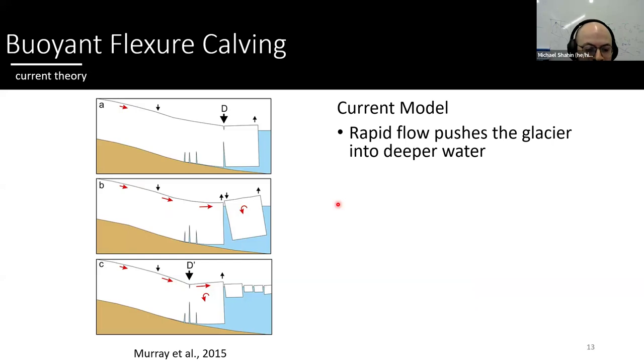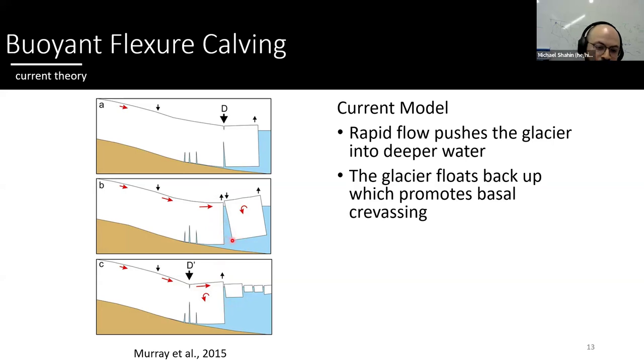So many glaciologists have come before me, they've observed this type of calving, flexure calving, and Tavi Murray's paper in 2015, they developed their own conceptual model of how a flexure would form. And what they argue, what they explain is that the glacier, since it's moving so fast at a meter per hour, which is roughly 24 meters per day, and Helheim can reach up to over 30 meters per day at the terminus, that that rapid glacier flow pushes the glacier into deeper water shown in this panel A here. And because ice is less dense than water, it has to readjust its buoyancy, so it then lifts up. And this lifting mechanism causes what's called a basal crevasse, so a giant crevasse at the bottom of the glacier. And eventually, it continues to grow, and it rotates back and knocks the calving, the new terminus.